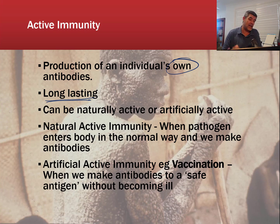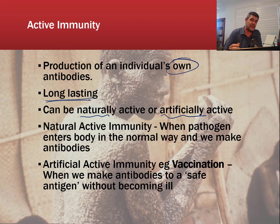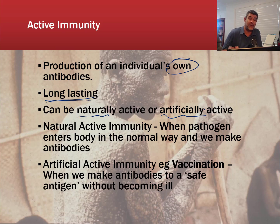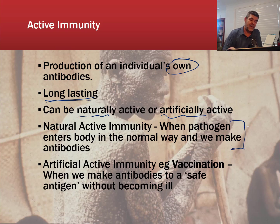We can acquire active immunity either naturally or artificially. Natural active immunity is when you are exposed to a particular pathogen and your body produces a response. There's been a lot of discussion about children's hygiene levels and whether exposure to certain pathogens builds up their immunity. However, there are certain pathogens you don't want to go through the process of building antibodies against, because the pathogen can be particularly virulent, create very serious symptoms, and be very easily passed on.